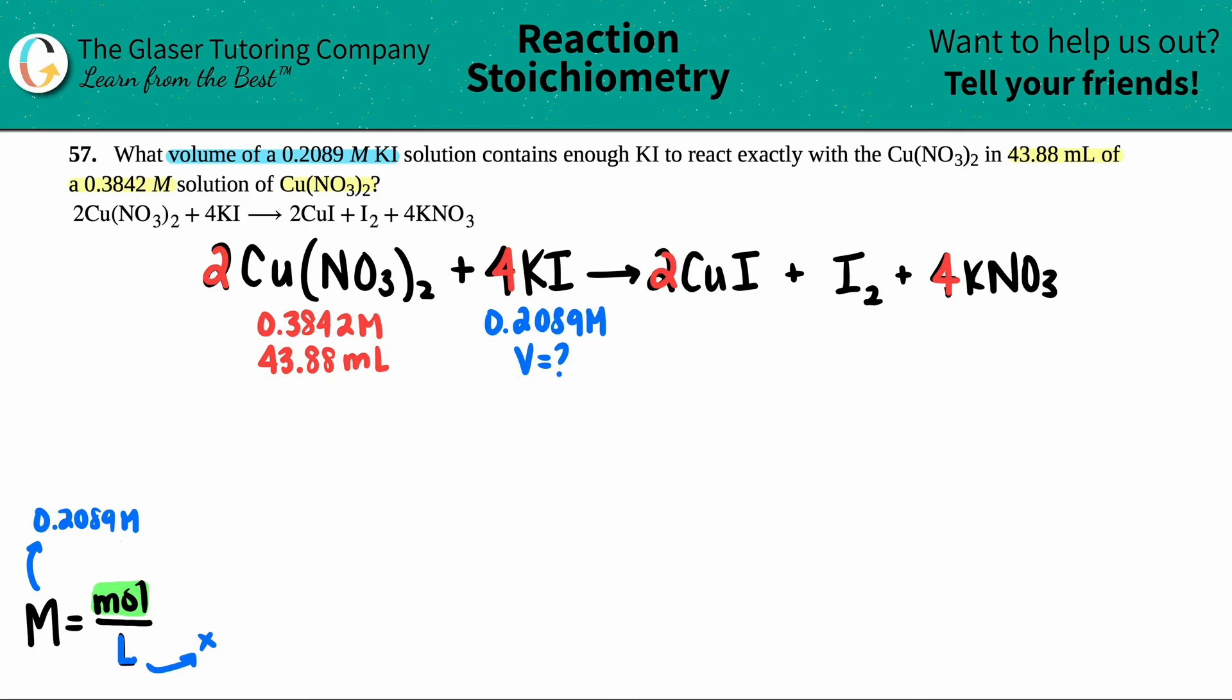That's when I'm going to use this information. In this case, we have a molarity and a volume for the Cu(NO3)2. We can find out the moles of this, so the first step is find the moles of the Cu(NO3)2.